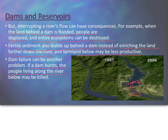If a dam breaks, all the water behind it comes flooding out — and if people are living on the other side, they can have big problems. Also, if a country upstream blocks a river with a dam, they're affecting how much water gets to countries downstream. A lot of wars have been fought over this, especially in places like Africa where water is scarce and countries are constantly damming rivers to keep water for themselves.